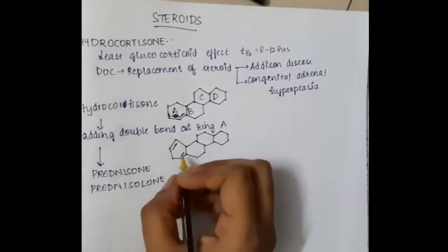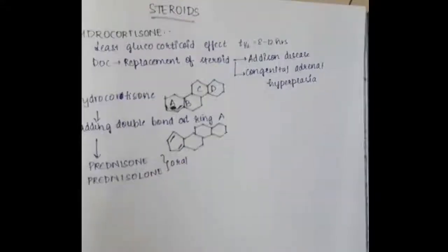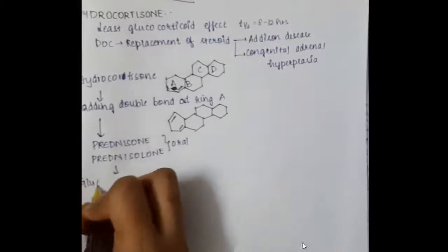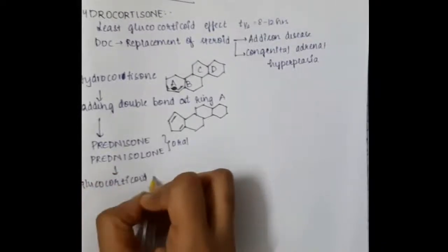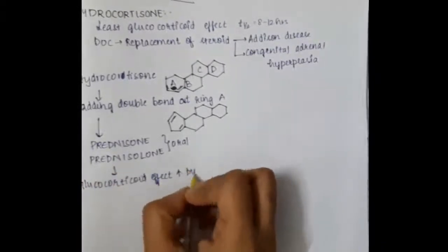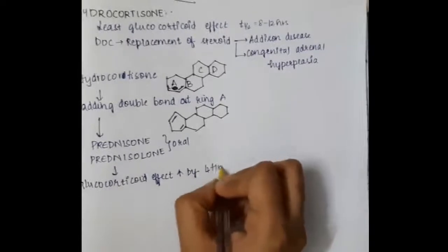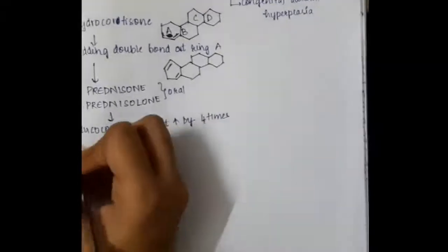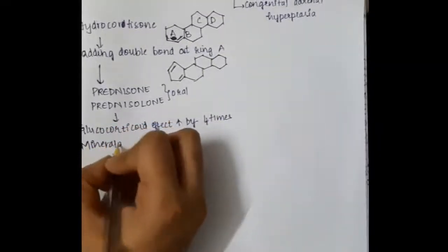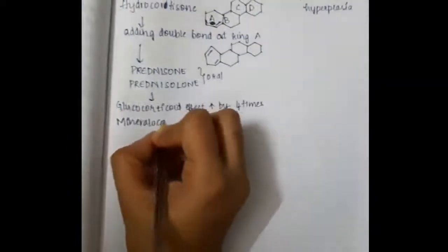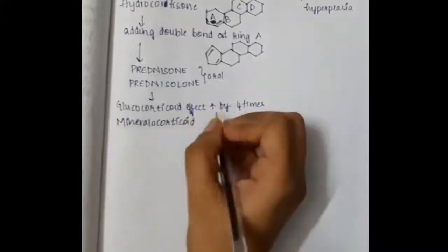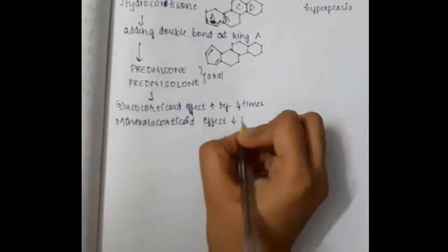Prednisolone or prednisone is given orally. In prednisolone, the glucocorticoid effect is increased by four times and the mineralocorticoid effect is decreased by 0.8 times.